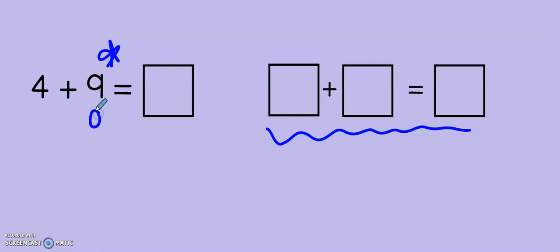And, how many do I need to get from 9 to 10? 9, 10. Oh, just 1. So, I need to add 1 to my 9. That gives me 10. Oh, let's move that 10 over here to our mystery box.